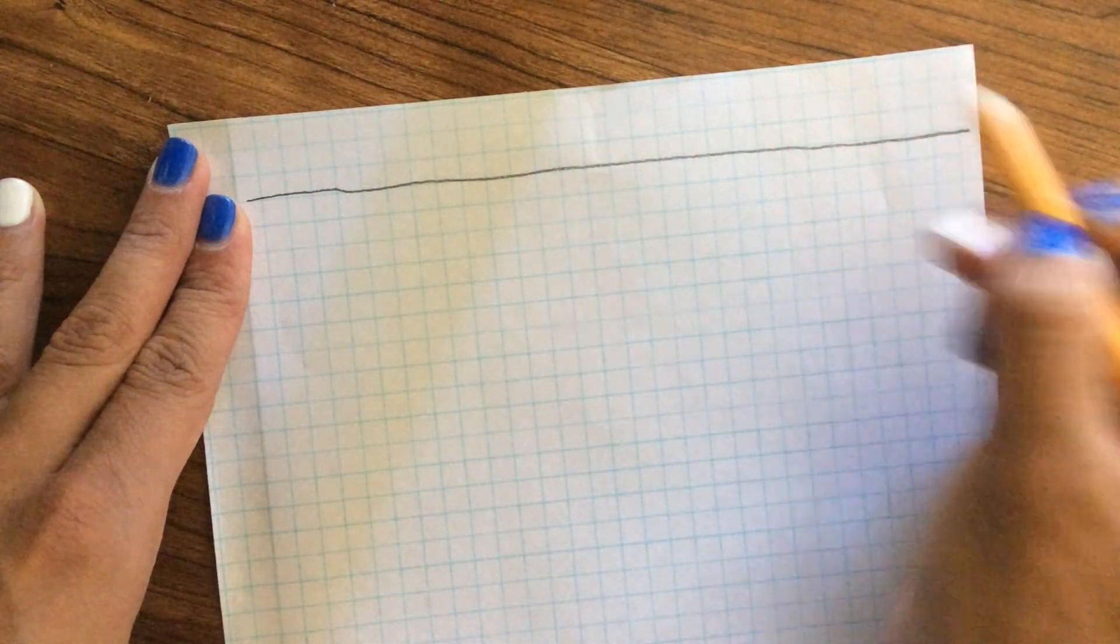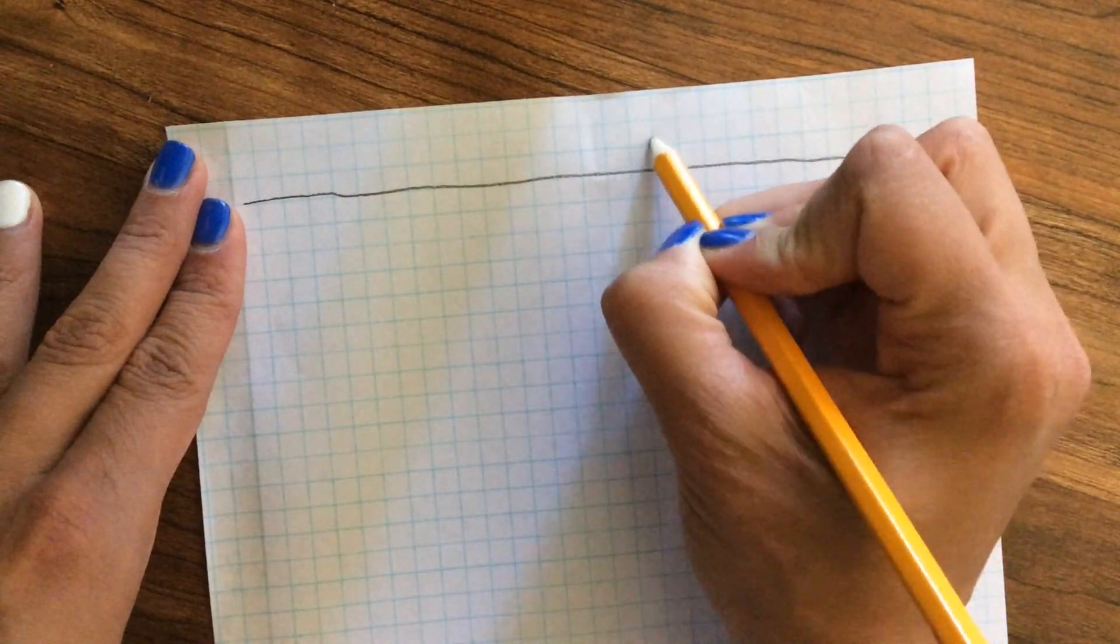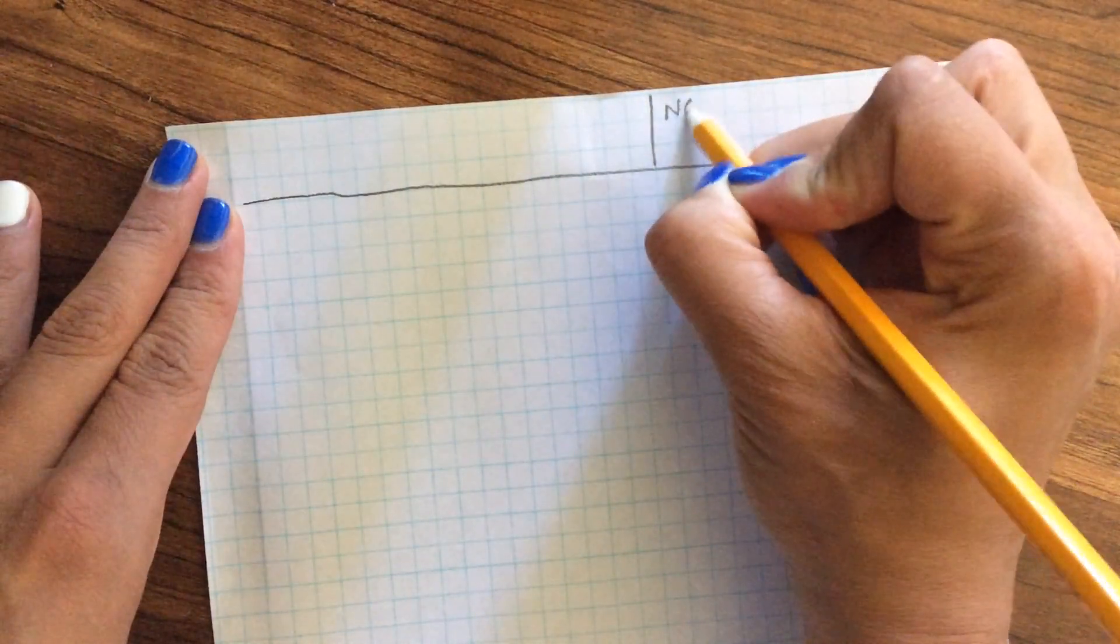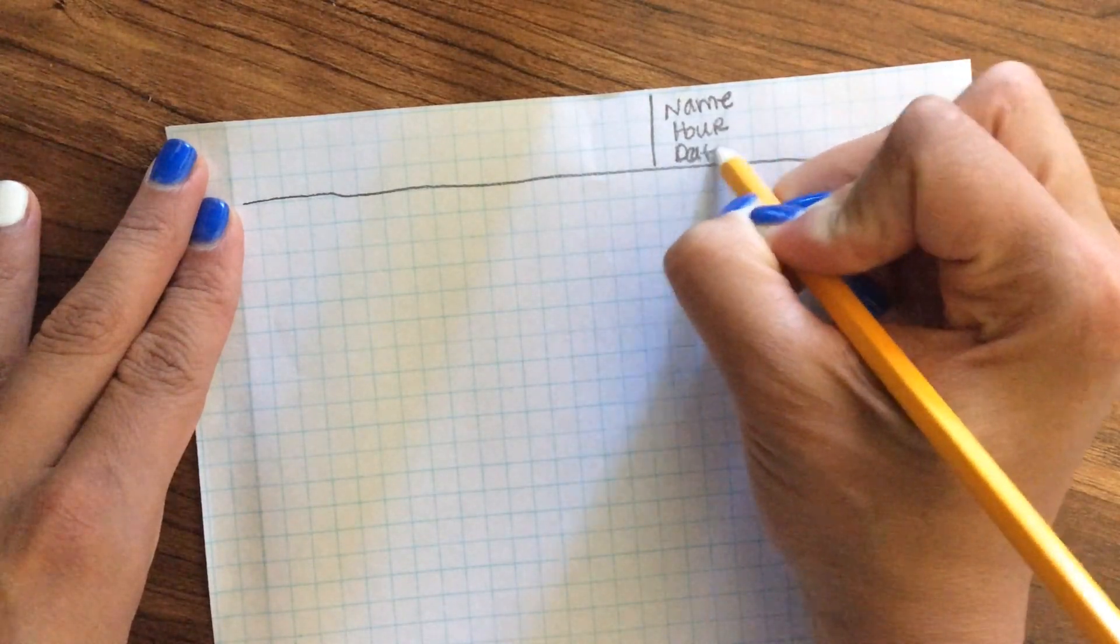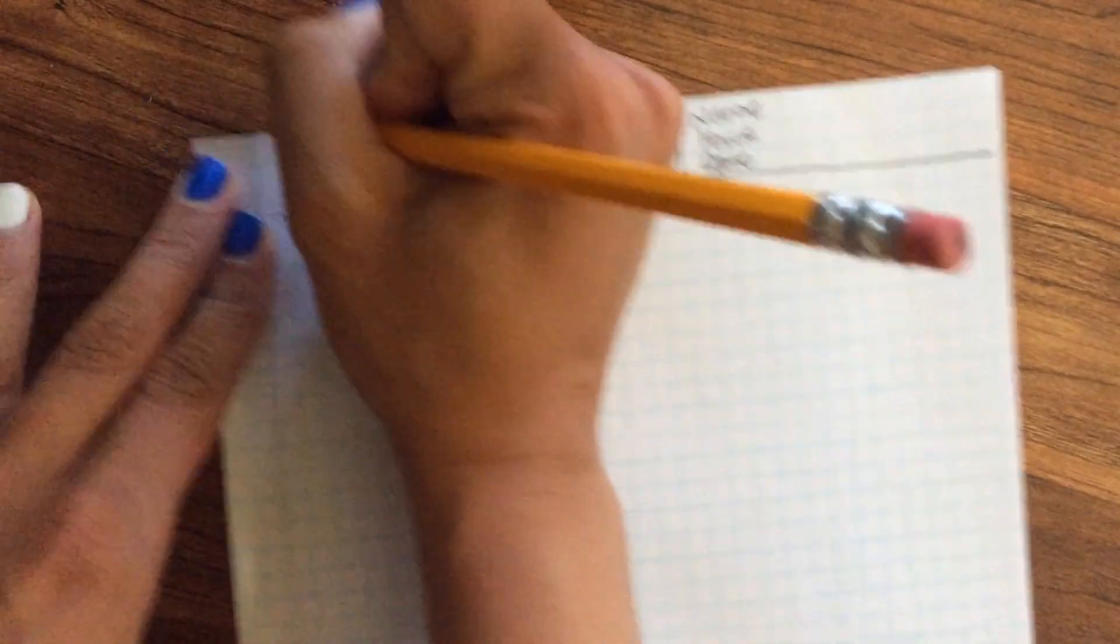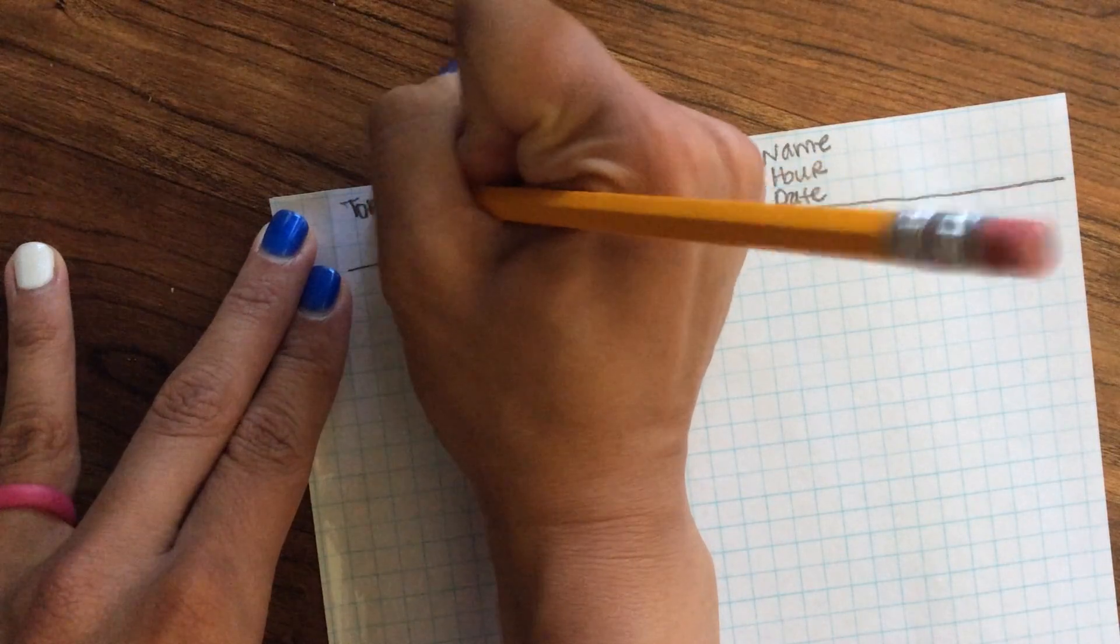So the first line I am going to make is about an inch down and I am going to make that for my topic and objective as well as for my name, hour, and date. And my topic and objective is going to go over here.